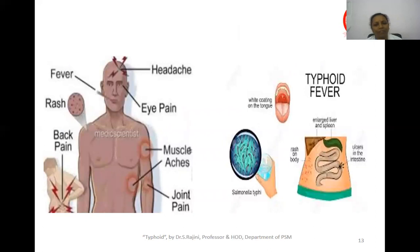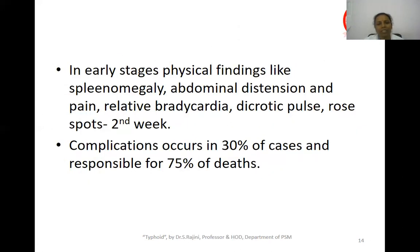Other signs and symptoms include headache, fever, eye pain, rashes over the body, muscle pain, joint pain, and back pain. Physical findings in later stages include splenomegaly, enlarged abdomen, abdominal distension, pain, relative bradycardia (dicrotic pulse), and rose spots.